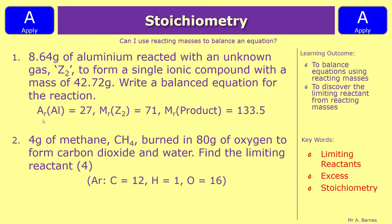Question two: 4 grams of methane CH₄ burned in 80 grams of oxygen to form carbon dioxide and water. Find the limiting reactant. Start by writing out your balanced symbol equation — remember oxygen is O₂, carbon dioxide is CO₂, water is H₂O. Once balanced, you've got the masses you need and the atomic masses to work out the moles, then follow the normal steps. Pause the video, have a go, and we'll see how you've done in a minute.